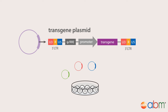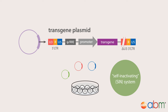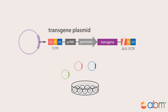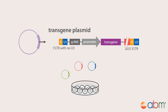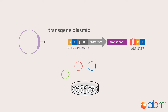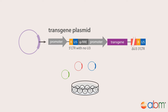By removing the enhancer and promoter region U3 from the 3' LTR, a replication-incompetent, self-inactivating system is created, as this deletion is transferred to the 5' LTR after reverse transcription and integration. The U3 of the 5' LTR is also replaced with a CMV promoter to eliminate the need for the transcriptional transactivator TAT.